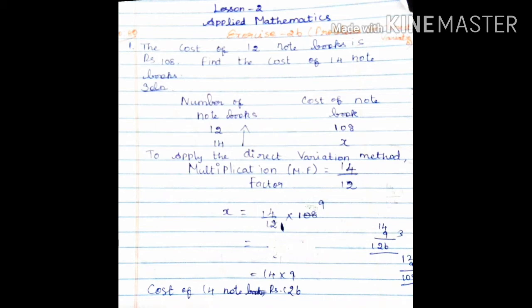To apply the direct variation method, find the multiplication factor: MF equals 14 by 12. Then x equals 14 by 12 into 108. Cancel and simplify: 12 table — 9 twelves are 108. Remaining: 14 into 9, which gives 126. So the cost of 14 notebooks equals Rs. 126.